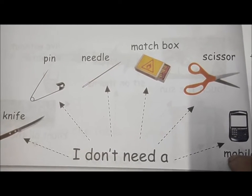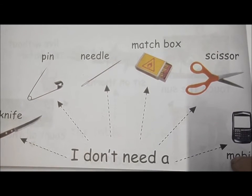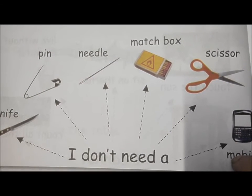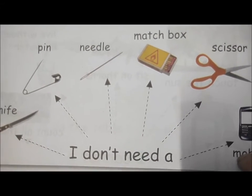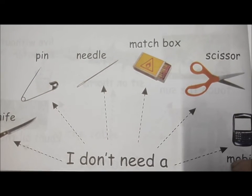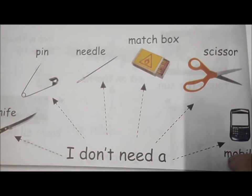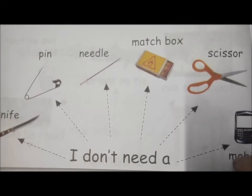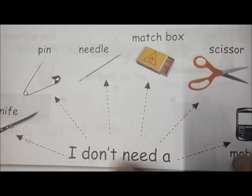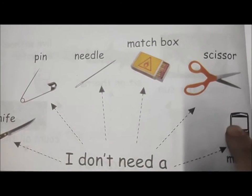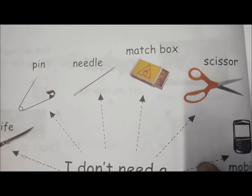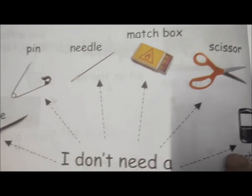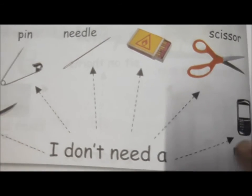Amma has to go to office or has some office work — some parents are doing work from home. So if you ask for the mobile, you shouldn't use it for your own. You don't need it. Only when it is given for the purpose of reading will you be given the mobile. So, I don't need a mobile.